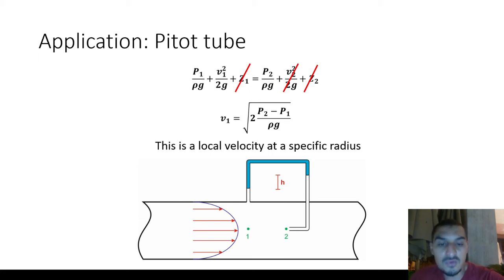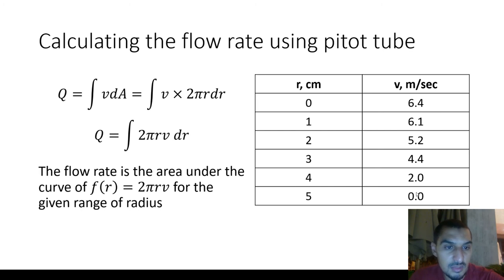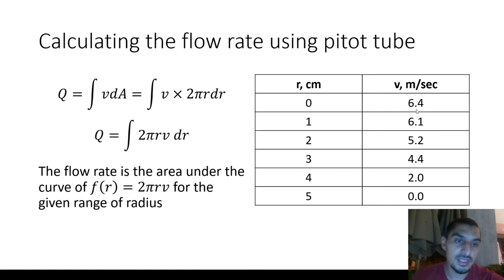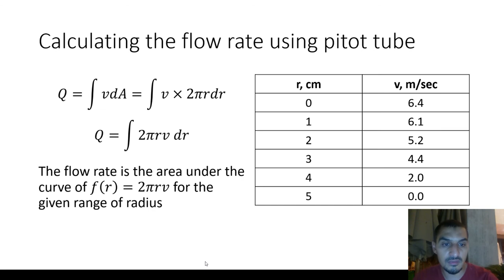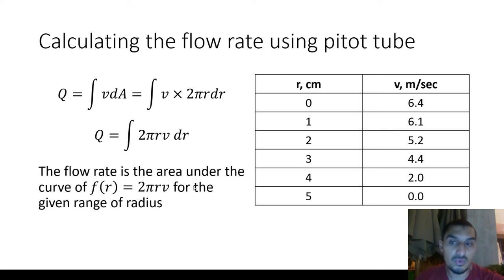This is shown in the table on the right: different radii and the corresponding velocities in meters per second. At radius equals zero — the centerline — velocity is at its maximum. It decreases as radius increases, until it reaches the pipe wall where velocity is zero, due to the no-slip boundary condition. We now need to use this tabulated data to get the flow rate.